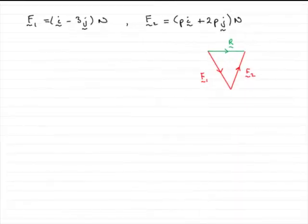And the last part of this question, we're given that the vector r is the resultant of f1 and f2. In other words, if we add f1 and f2 together, we get the resultant.